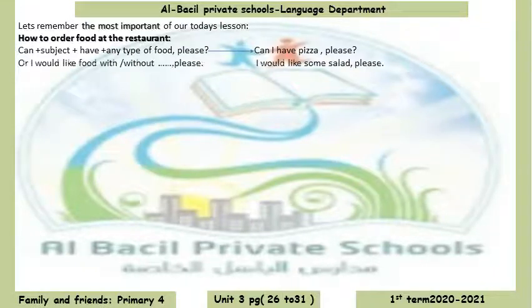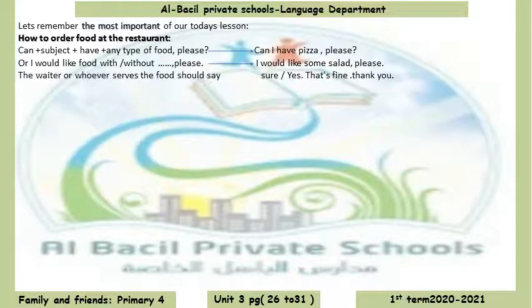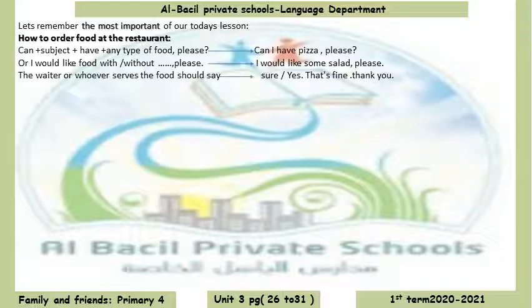Second sentence: I would like food without [something], please. I would like any type of food with or without [something], please. For example: I would like some salad, please. When the waiter responds, or whoever serves the food, they should say: Sure. Or: Yes, that's fine. Thank you.